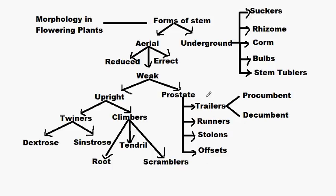The trailers can be classified into two types: procumbent and decumbent. It is quite a lot of classification, but if we study on the basis of logic, it will not be hard to remember all these and what they mean. So let's get started.